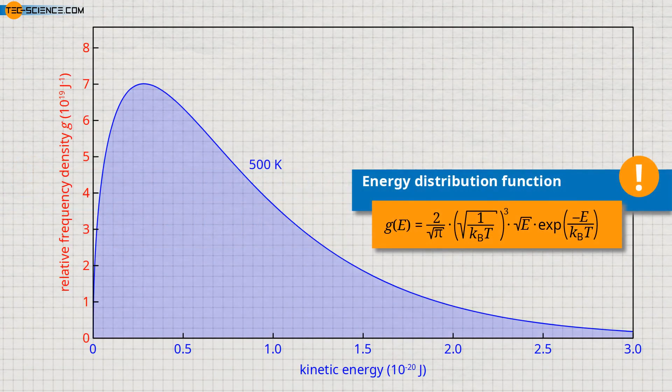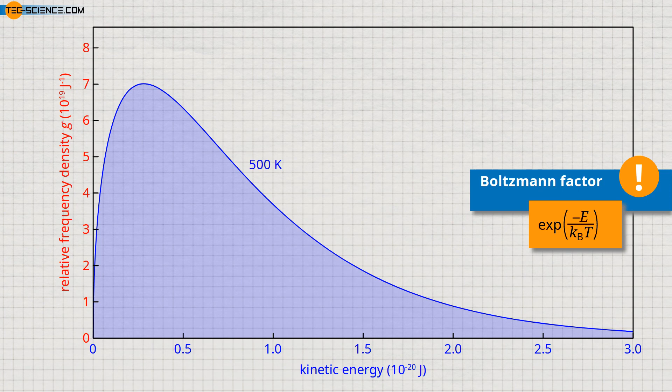The diagram shows the distribution of the kinetic energies for a temperature of 500 Kelvin. Note that this distribution is valid for any ideal gas at the given temperature, since the distribution function is determined by the temperature alone. The exponential term in the distribution function plays a special role in statistical physics — so-called Boltzmann statistics. This term describes in general the frequency or probability with which certain energies are present. The term called the Boltzmann factor always occurs whenever random distributions of energetic states are involved, for example also with Planck's law of blackbody radiation.